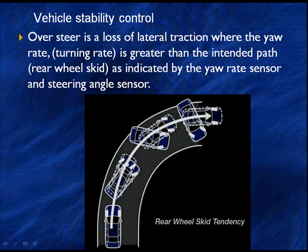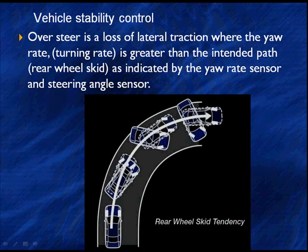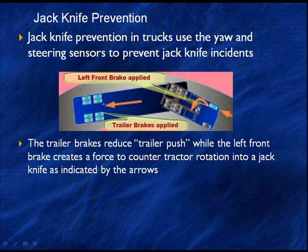Oversteer is a loss of lateral traction where the yaw rate — the turning rate — is greater than the intended path. It's essentially a rear-wheel skid, as indicated by the yaw rate sensor and steering sensor.